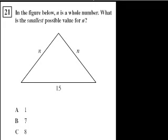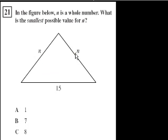We're on problem 21. In the figure below, n is a whole number. What is the smallest possible value for n? Both of these sides are n. This is something that's actually really good to get this intuition, because this shows up on all sorts of standardized tests. So let's think about how small can we make n.